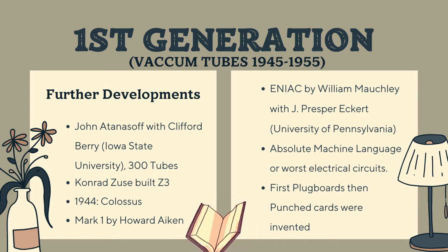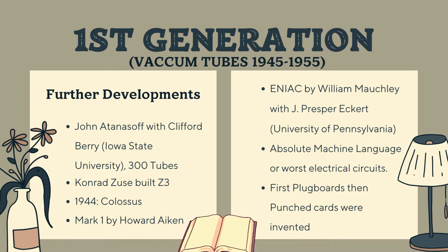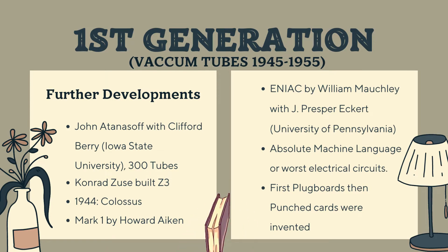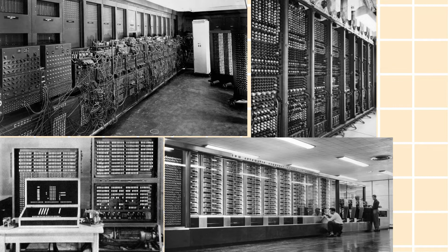You might wonder how these computers differed from each other — well, they were almost the same. All programming was done in machine language, or even worse, by wiring up electrical circuits and connecting thousands of cables to plug boards to control the machine's basic functions. Programming languages were unknown at that time, making everything very complicated. By the early 1950s, there came some improvement as punch cards were introduced and instructions were written onto them instead of plug boards.